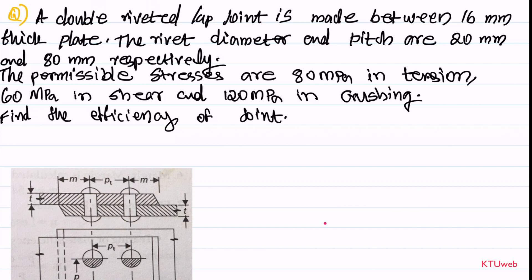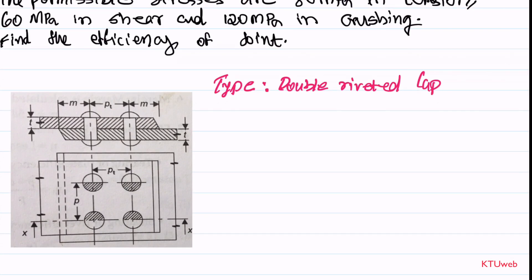You can find similar problems in most standard textbooks — these are basic questions you can expect on efficiency of riveted joints. Remember, here we are not dealing with the dimensions and design of the riveted joint; we are simply discussing how to find the efficiency from the given data. Whenever you solve a design problem, check which kind of rivet joint you have. Right now we have a double riveted lap joint. Knowing the joint type helps you understand how many rivets are used per pitch length.